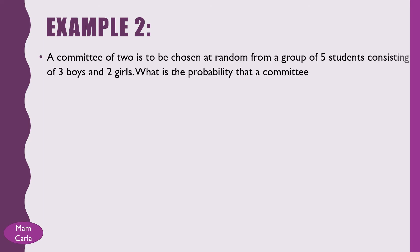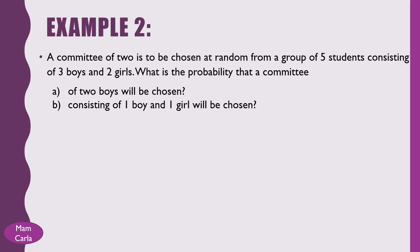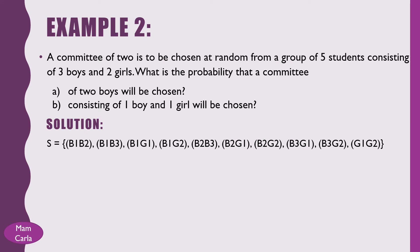Now let us deal with example number 2. A committee of 2 is to be chosen at random from a group of 5 students consisting of 3 boys and 2 girls. To solve this problem, we first list down the sample space. The possible outcomes are: (B1,B2), (B1,B3), (B1,G1), (B1,G2), (B2,B3), (B2,G1), (B2,G2), (B3,G1), (B3,G2), (G1,G2). The cardinality of the sample space is 10.